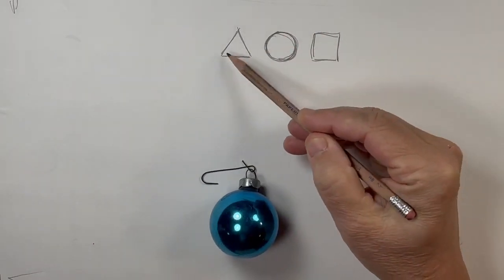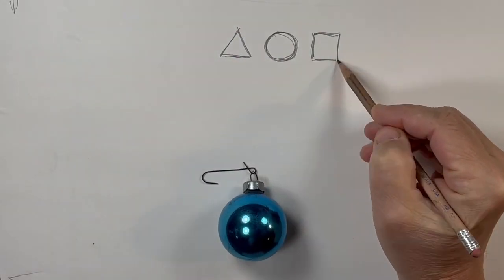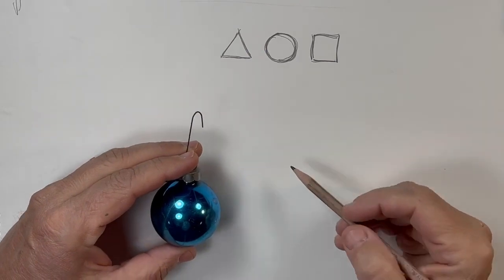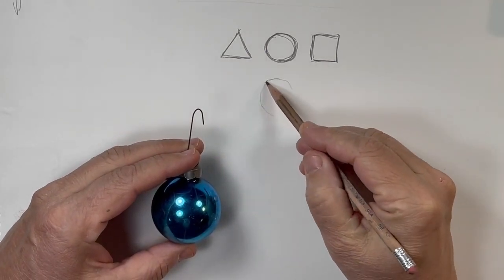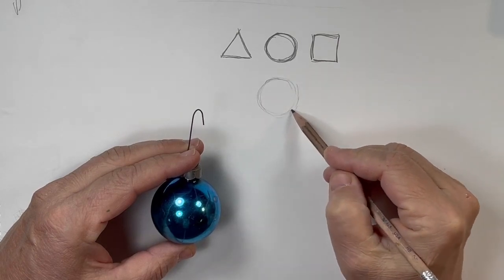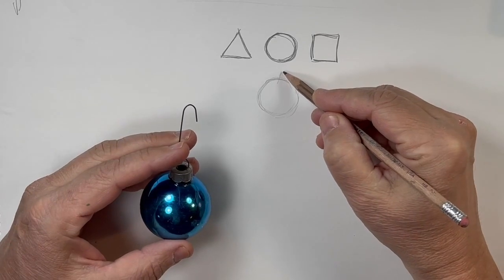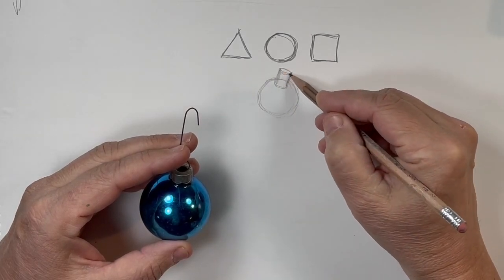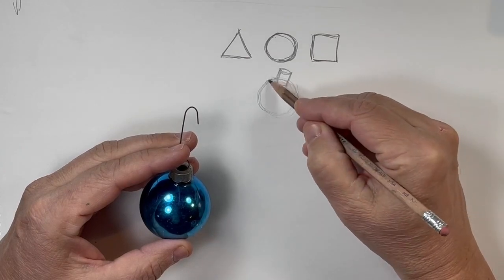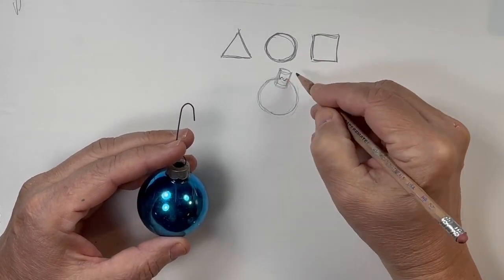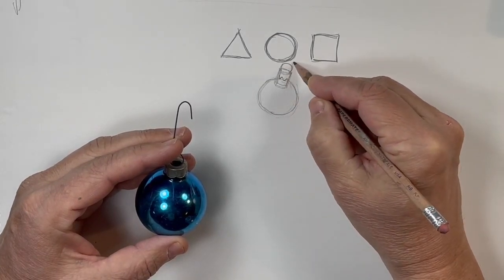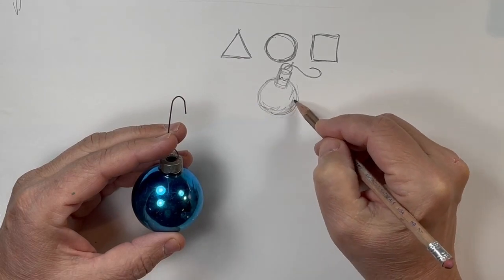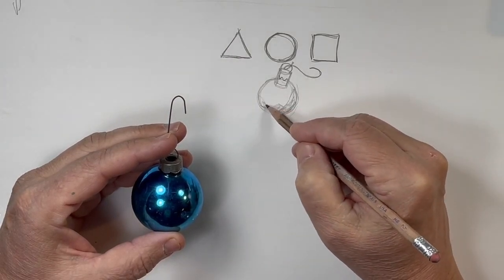Moving on to that same Christmas ball, we're going to draw the circle loosely, as I've tried to show you before, and then it's intersected by this cone — okay, so this is what happens when you talk without a script or a teleprompter, I'm just winging it. So there we have our Christmas ball, with this little loop at the top and this little hanger.